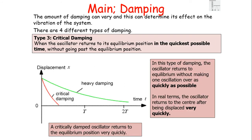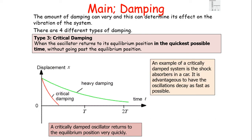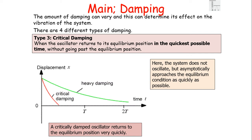The third type of dampening is critical dampening — when an oscillator returns to the equilibrium position in the quickest possible time without going past it, carrying out only half a cycle. The oscillator returns to equilibrium without completing one full oscillation as quickly as possible. A critically damped oscillator returns to equilibrium very quickly and the dampening effect is very sudden. An example is the shock absorber in a car — it's advantageous for oscillations to decay as quickly as possible without a full oscillation, so the car doesn't bounce when going over bumps. The system approaches equilibrium asymptotically as quickly as possible.